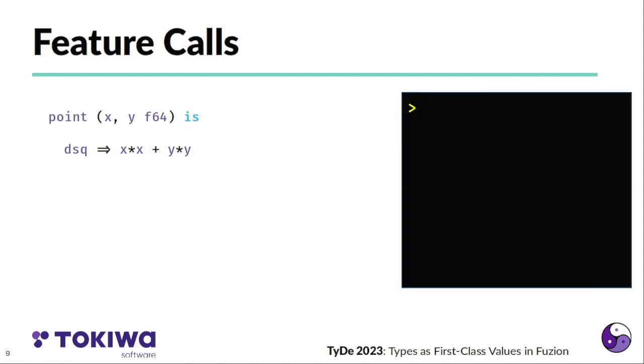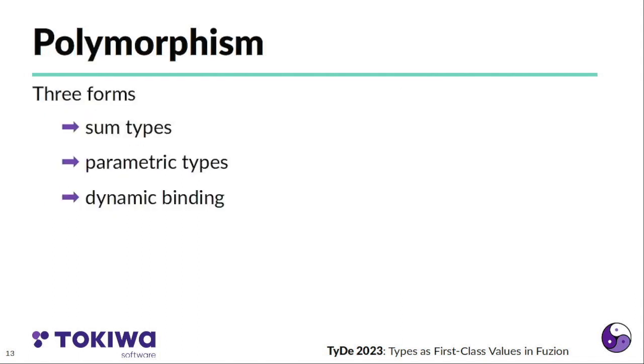I'll go back to the function version. What you can do with features to actually execute code is you can perform feature calls. You can call a point, you can call this constructor to actually create a value for a point here with the coordinates three and four, and you can call d squared on that point, pass the result to another feature say, which when we run this then prints the result, so fairly simple.